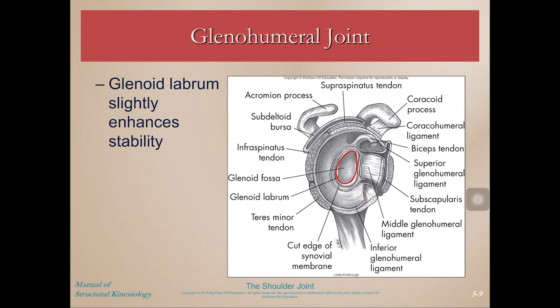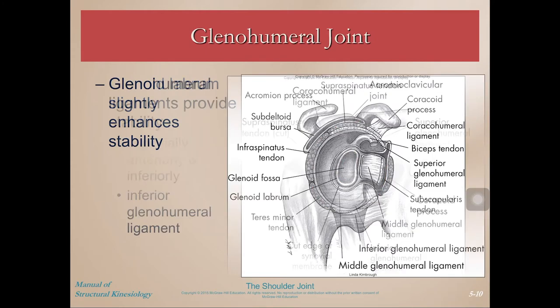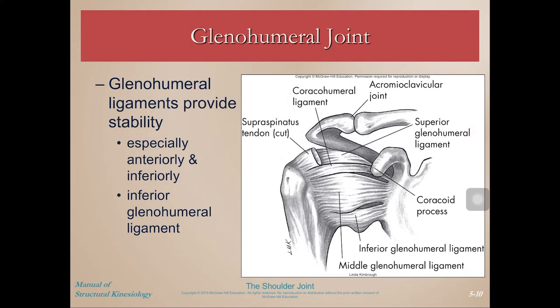You can see all the tendons and ligaments that cross this area, as well as the rotator cuff muscles: the supraspinatus tendon, infraspinatus tendon, teres minor, and subscapularis. On the glenohumeral joint, the ligaments provide a lot of the stability, especially anteriorly and inferiorly.